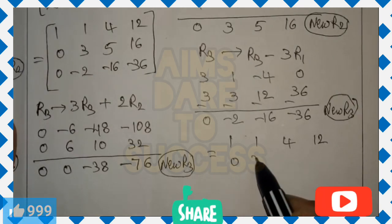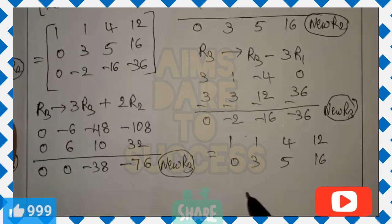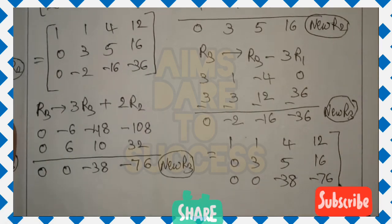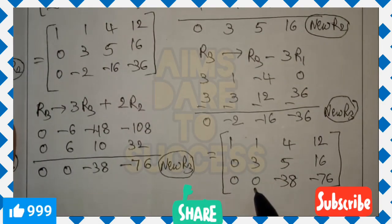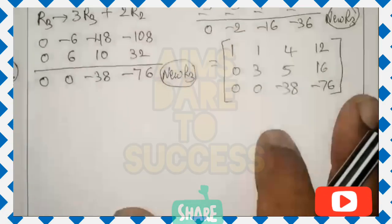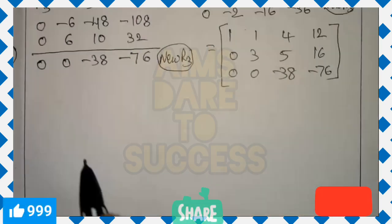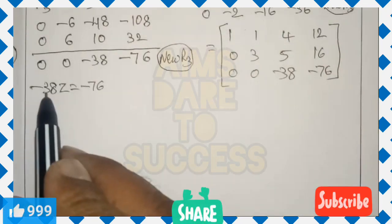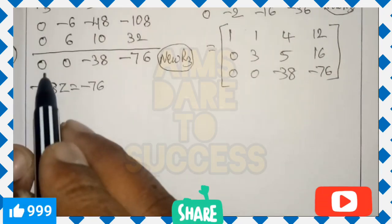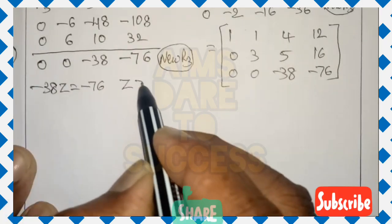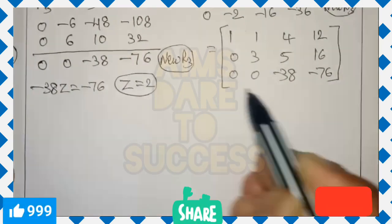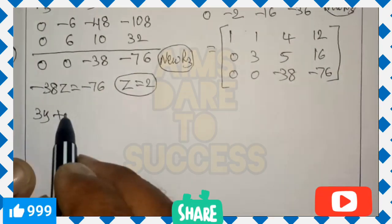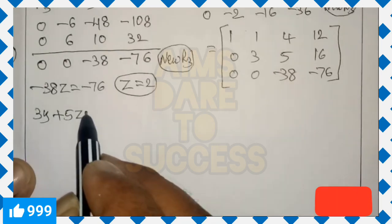We have achieved the upper triangular form. From R3: -38z = -76. The negatives cancel, and 38 goes into 76 twice, so z = 2. After getting z, use R2: 3y plus 5z equals 16. Substituting z = 2: 3y + 10 = 16.